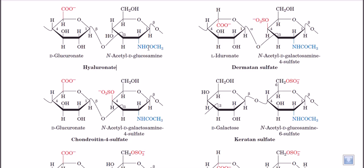In N-acetyl glucosamine, we have an NH group attached to the second carbon position — a direct nitrogen bond making the N-acetyl glucosamine. Combined with glucuronic acid, we get hyaluronic acid. We can find hyaluronic acid in bacterial cell walls because N-acetyl glucosamine and N-acetyl muramic acid both can be found in cell walls, especially in the peptidoglycan layer.